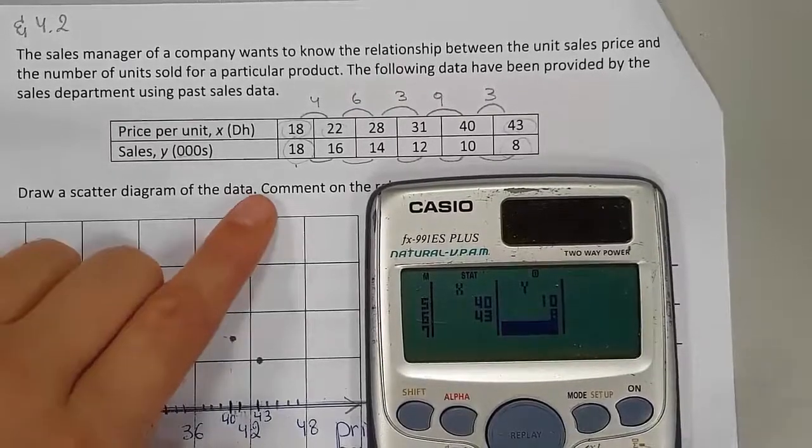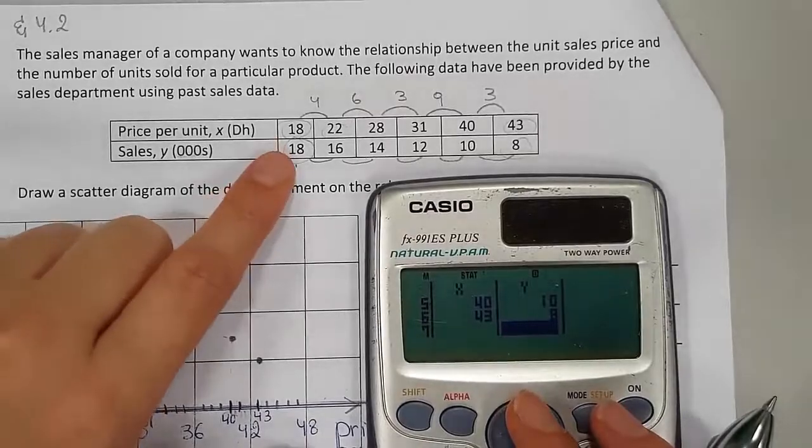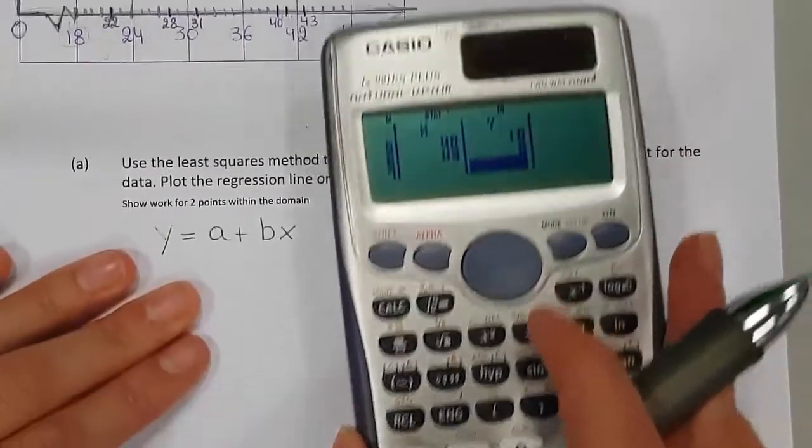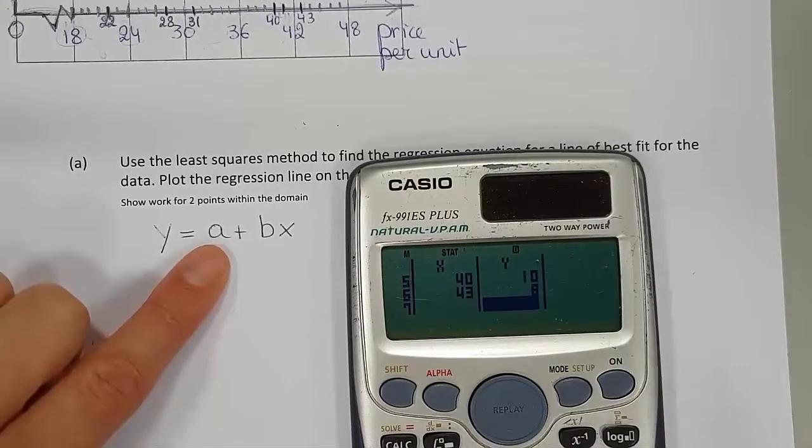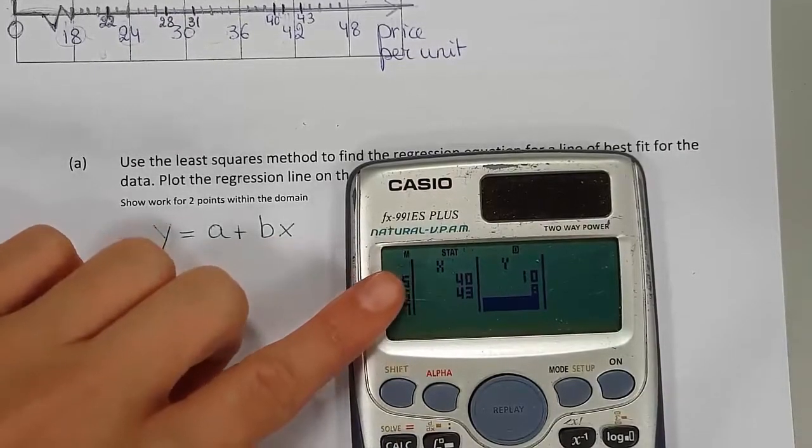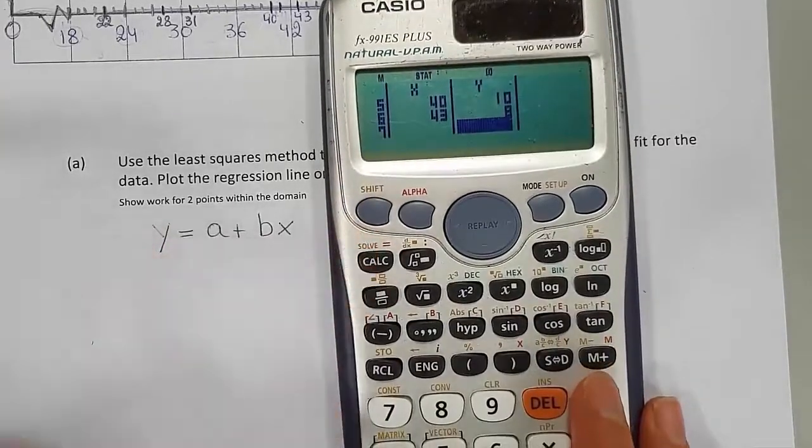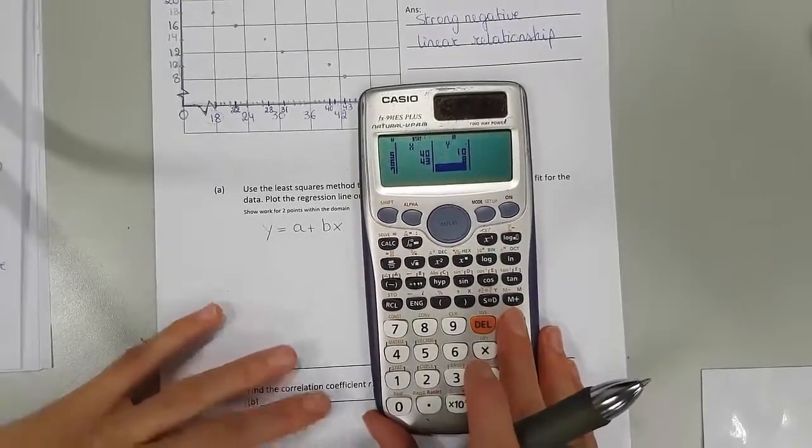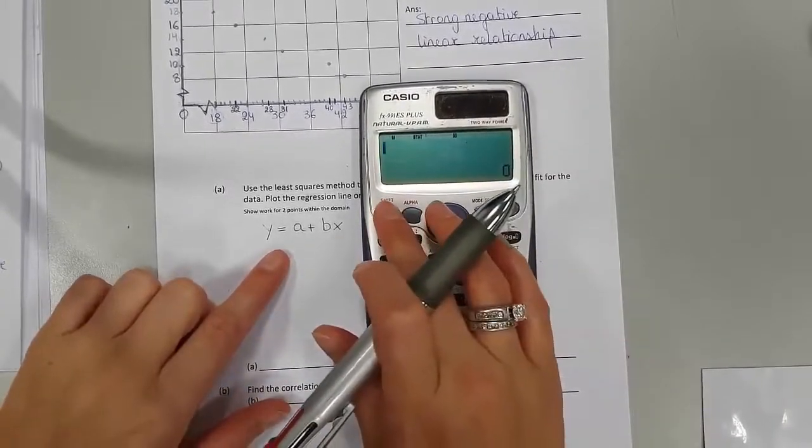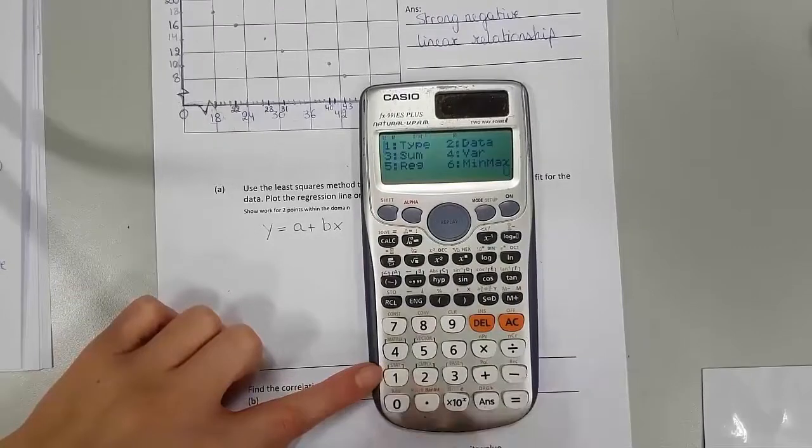At this point I have entered all my x's and all my y's in my calculator. So now we have to find out what the A is and what the B is. So go out of entering the data. Press AC.